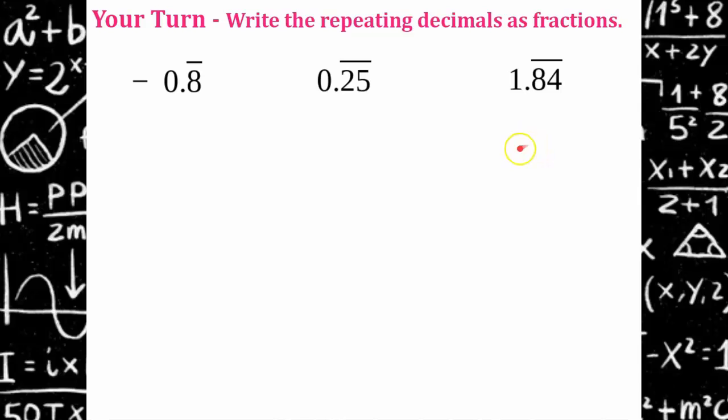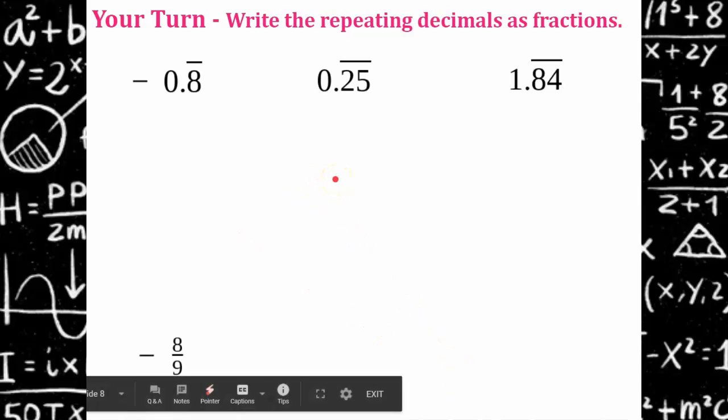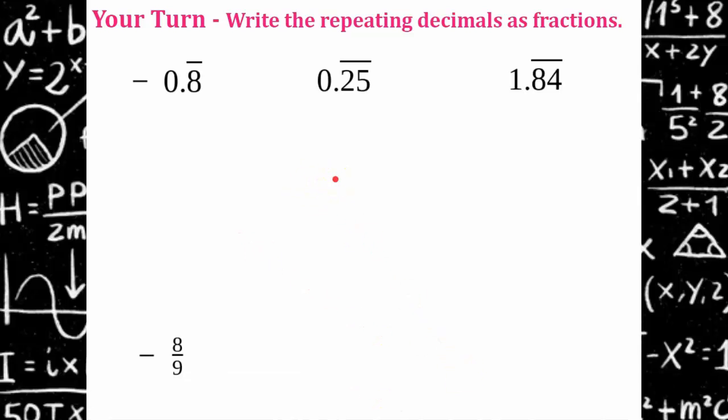Welcome back. So on the first one, you should have gotten negative 8 ninths. So you're going to have 10x equals 8.8 repeating. Subtracting x equals 0.8 repeating. 9x equals 8. Divide both sides by 9. And you get to keep, go back and add the negative sign. So negative 8 ninths.